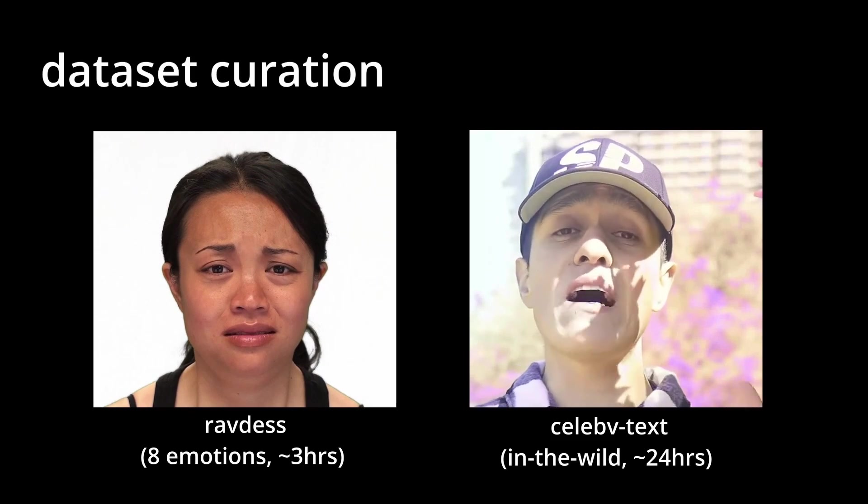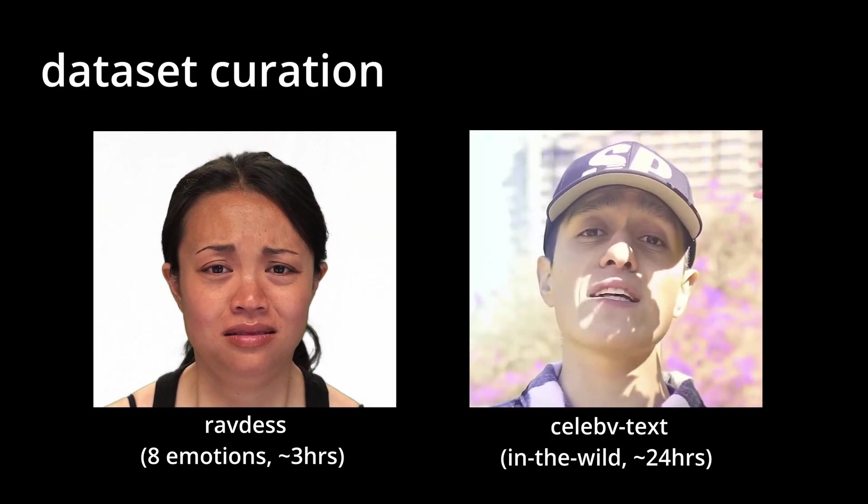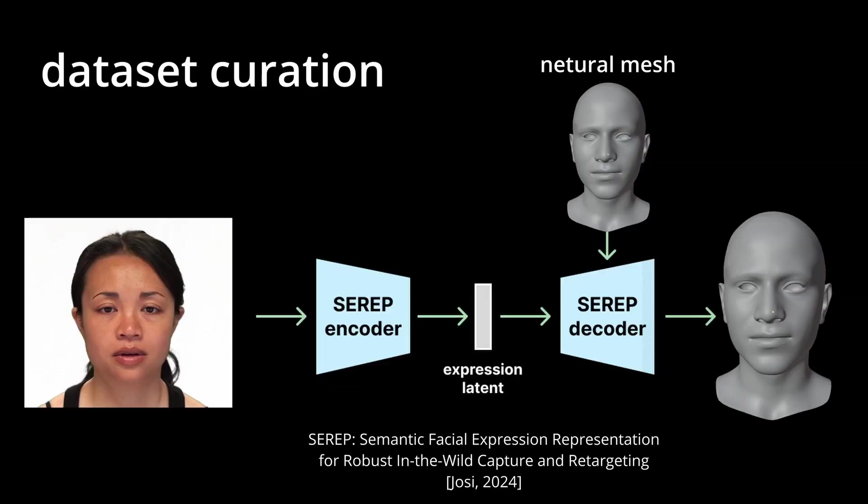We use the recently proposed SERP model to process the dataset. The pre-trained SERP encoder extracts latent facial expression features from each video frame, while the pre-trained decoder reconstructs the deformed mesh using the latent code and a neutral mesh. Our latent diffusion model is trained on the latent space of SERP, utilizing the pre-trained decoder to output 3D mesh.